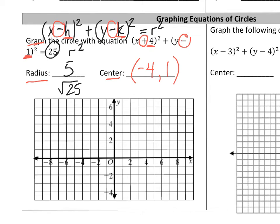Now I have the center at negative 4, positive 1, and a radius of 5. I'll plot the center and then go 5 units to the right, 5 units down, 5 units to the left, and 5 units up to mark points on the circle. Once I have those points, I sketch out the circle as best I can, making sure to touch all the points that represent the length of the radius.